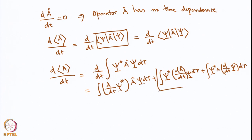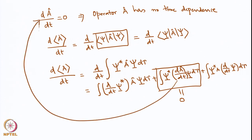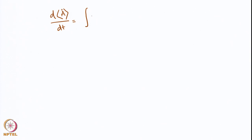Now the second integral equals 0, because we said at the outset that dA/dt equals 0. So we are left with only two integrals. Therefore d<A>/dt equals the integral of (d/dt psi*) A psi d-tau plus the integral of psi* A (d/dt psi) d-tau.